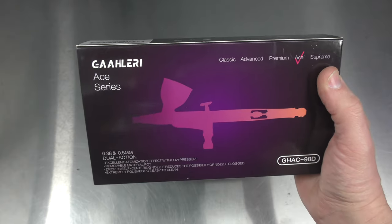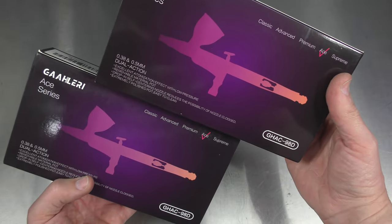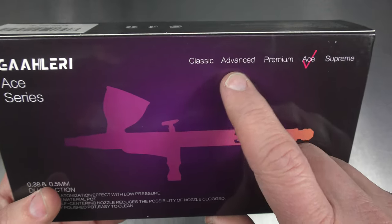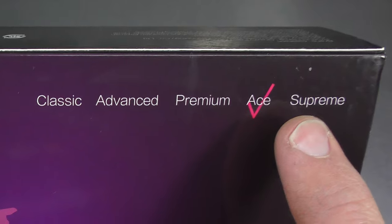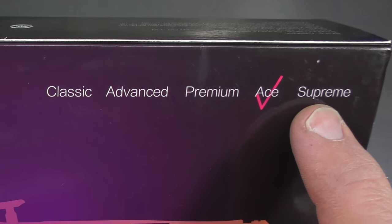So as well as the 98D, Gallery also sent me another 98D. They may have done that by accident because they're both the same and in the Ace series. I'll chat with them about potentially getting some of these others. From what I've heard the Supreme, which will be more like your Micron equivalent, is still in production.